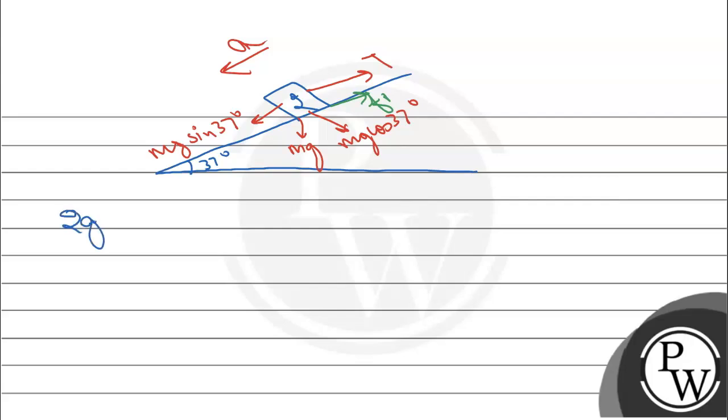Now let's consider the 2 kg block to find tension. Inclination is 37 degrees, this is mg. This component will be mg cos 37 degree and this component will be mg sin 37 degree. String has tension T in this direction and downward motion with acceleration a, so friction f1 is also in this direction.